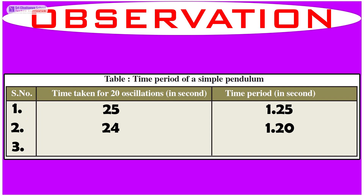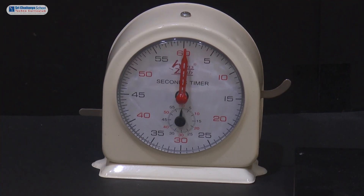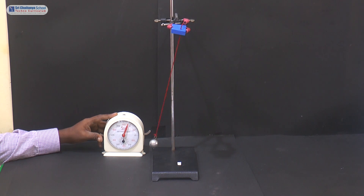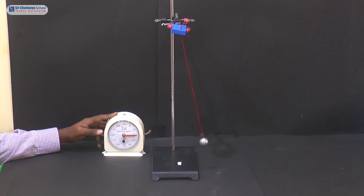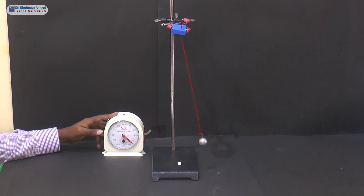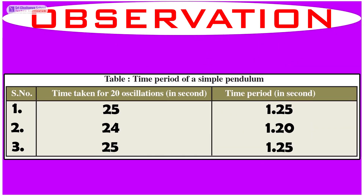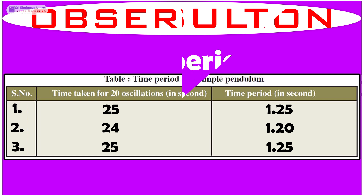The third time taken for 20 oscillations — counting: 1, 2, 3, 4, 5, 6, 7, 8, 9, 10, 11, 12, 13, 14, 15, 16, 17, 18, 19, 20 — is 25 seconds, and the time period is 1.25 seconds.